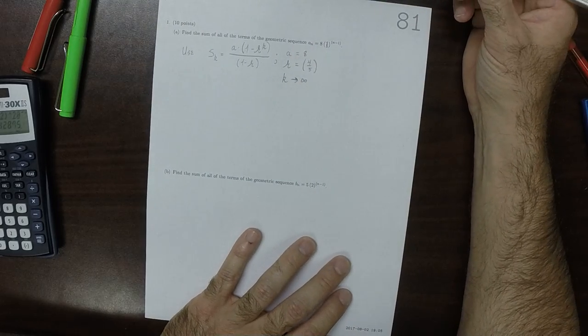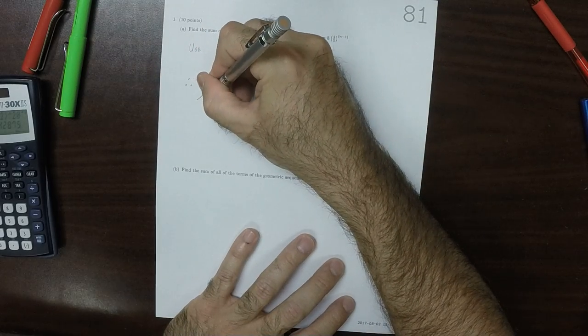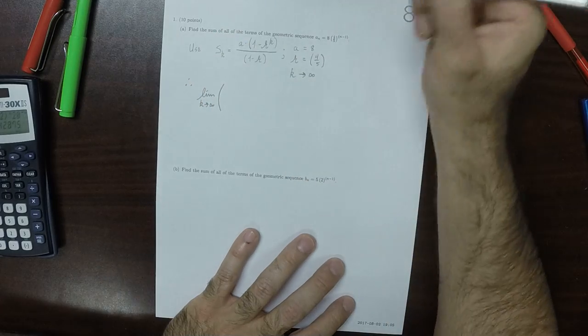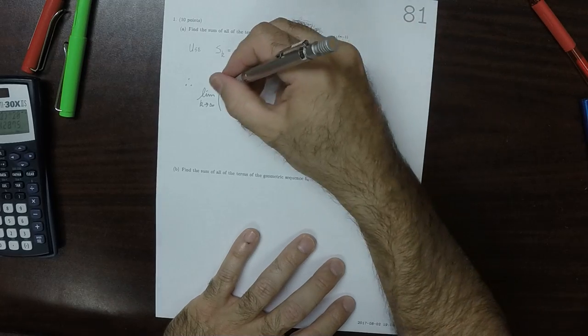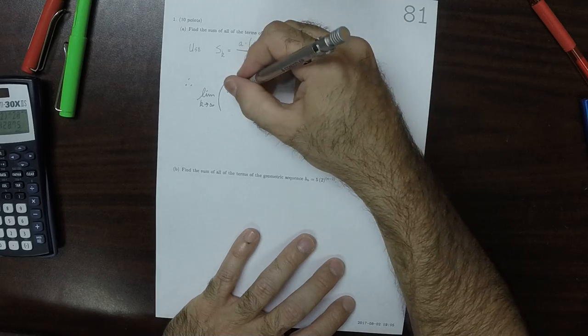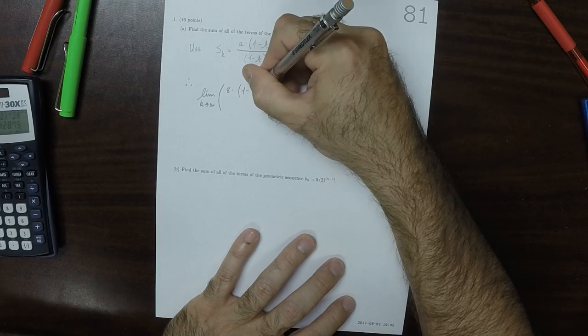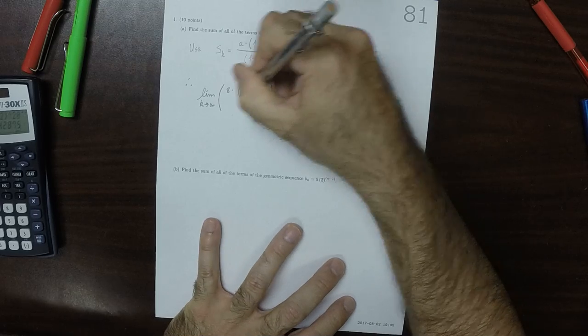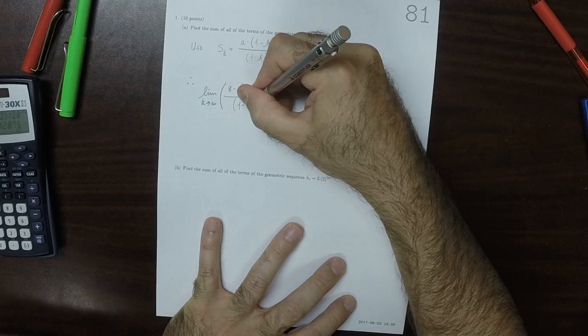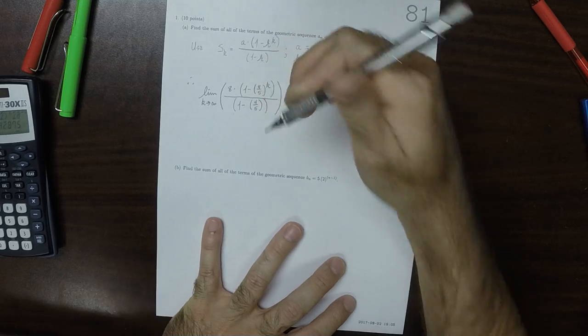So that would be the limit as K goes to infinity of, well, it would be 8 multiplied by 1 minus 4/5 to exponent K, and then divide by 1 minus 4/5.